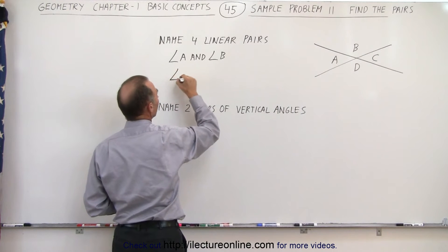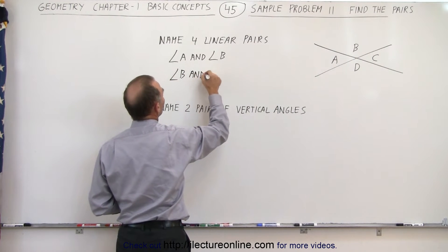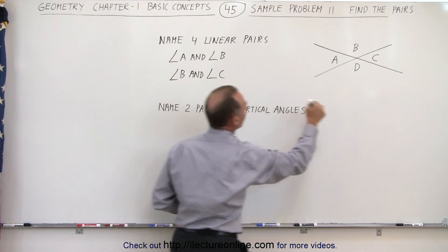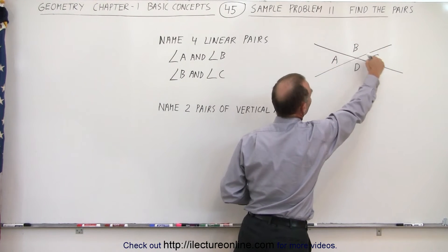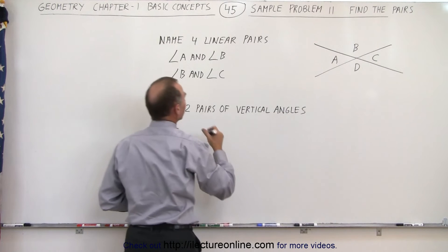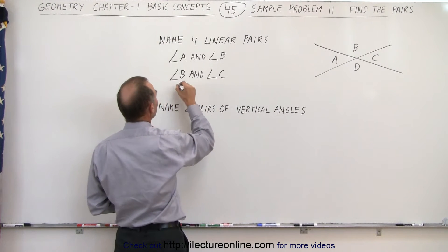We can say that angle B and angle C also are linear pair because the two measures together, the measure of two angles together, gives us 180 degrees.